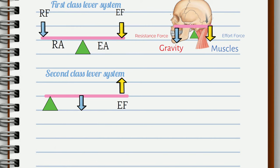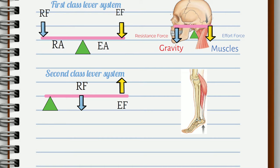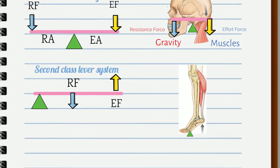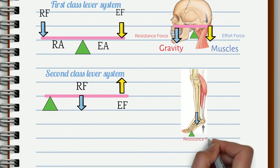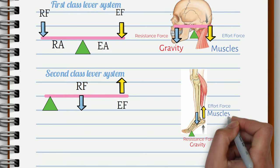An example of the second class lever system in the human body are calves producing torque needed to stand up on tippy toes. The axis of rotation here is around the metatarsophalangeal joint. The resistance force is gravity pulling the body down while the effort force is produced by the gastrocnemius and soleus muscles generating plantar flexion force.